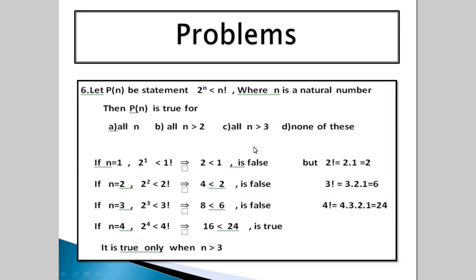Use the same procedure. If n equals 1: 2 is less than 1 — this is false. If n equals 2: 2 squared less than 2 factorial gives 4 less than 2 — this is also false. If n equals 3: 2 to the power of 3 less than 3 factorial gives 8 less than 6 — also false. If n equals 4: 2 to the power of 4 less than 4 factorial gives 16 less than 24 — this is true.